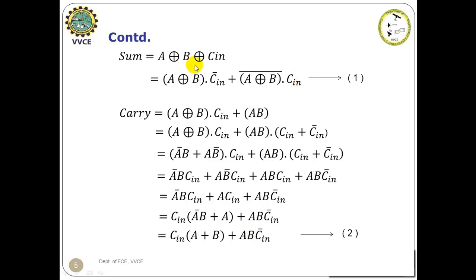Next, with Cin is equal to one in the expression one, the sum output will be same as that of XNOR gate, that is A XOR B whole bar. And the carry output will be same as that of A plus B, that is the OR gate.